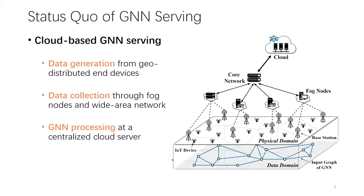To render smooth services for these applications, the de facto standard methodology is cloud-serving, which offloads raw data and computes GNN on central cloud servers. Its complete flow consists of three steps. First, each end device contributes its sensory data as a vertex in the graph. Second, the graph data are uploaded through fog nodes and the wide area network. Third, the graph is processed with a GNN model at a centralized cloud server.